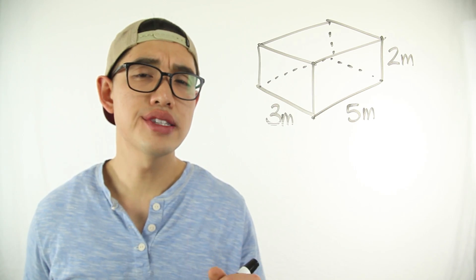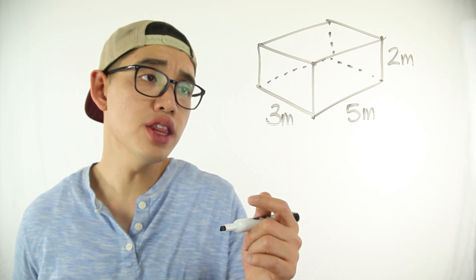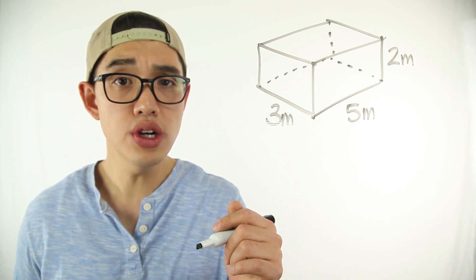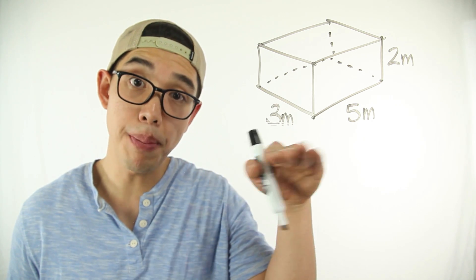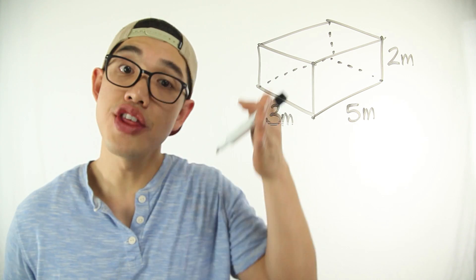Alright, let's do the problem. So let's take a look. So basically to find the volume, all you really need to do is multiply the base or the bottom and multiply it by the height.